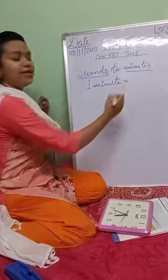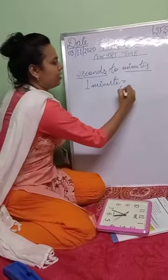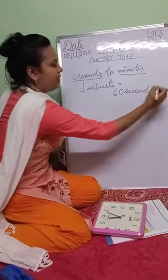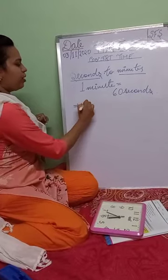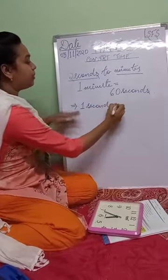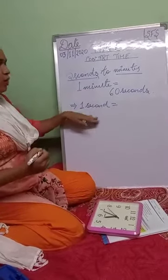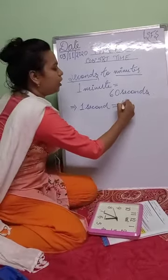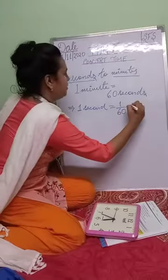You all remember: one minute is equal to sixty seconds. Since second is a smaller unit of minute, one second will be less than one minute, so one second equals one by sixty of a minute.